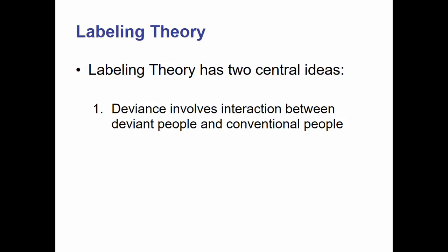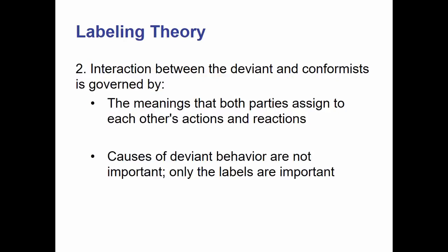There are two central ideas to labeling theory. First is that deviance involves interaction between deviant people and conventional people. In order for something to be classified as deviant, the deviant — the criminal, the weirdo — has to interact with someone who is quote-unquote normal. The interaction between deviants and conformists is governed by the meanings that both parties assign to each other's actions and reactions. What does the conventional person think of what the deviant person is doing? There's a little web there.